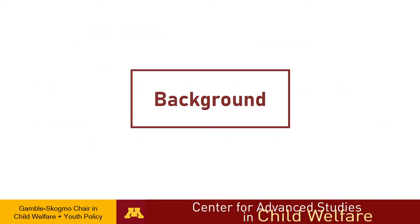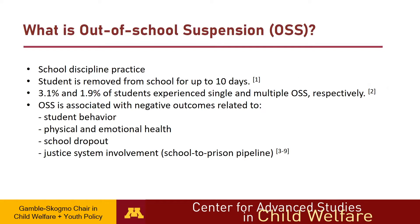Let's start with background about risk factors of out-of-school suspension. Out-of-school suspension, or OSS, is a widely used disciplinary practice in which a student is removed from school for a period of no more than 10 days. Among 50 million students enrolled in U.S. public schools during the 2015-2016 school year, about 3.1% and 1.9% experienced single and multiple out-of-school suspensions, respectively.